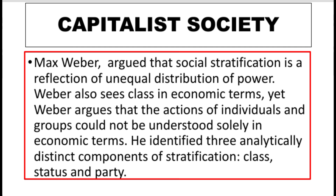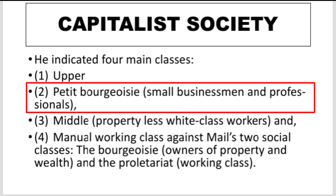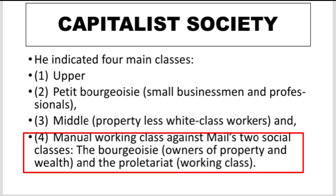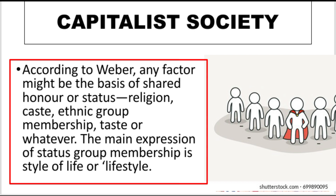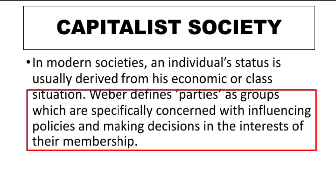Weber introduces three key concepts for analyzing stratification: class, status, and party. Class is defined differently from the Marxist definition in terms of economy and membership. The main class divisions are not simply workers versus ruling class. Status refers to the shared honor among members of a social group — including religion and group membership — and in modern societies individual status is usually derived from economic and class situation. Party is the political dimension of stratification; Weber defines the party as a group of individuals dealing with policy-making decisions and their implementation, which also influences stratification.